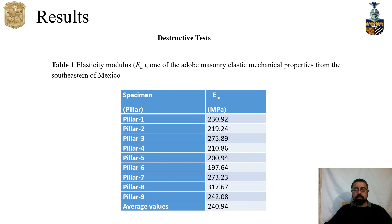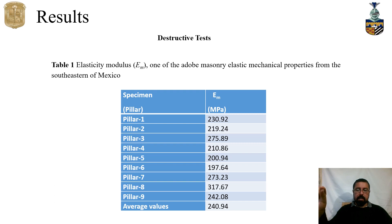With the destructive test we could estimate the elasticity modulus. The values for each pillar tested are quite similar: pillar 1 gave 230, pillar 2 gave 290, pillar 3 gave 275 — which is a slight peak. Pillars 4 and 5 are around 200, and except for pillar 8 with a value of 370, the others are very much alike.